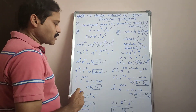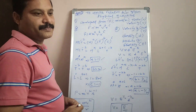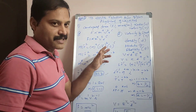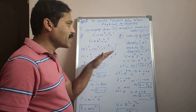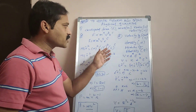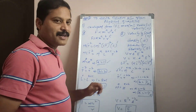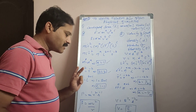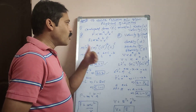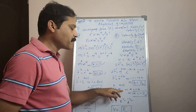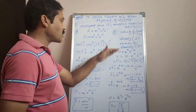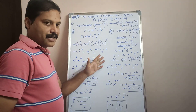The last topic is the limitations of dimensional methods. First, this method is not applicable for dimensionless constants — quantities like angle, strain, and relative density which have no dimensional formula. Second, it fails if the equation consists of more than two terms; for example, S = UT + ½AT² has two terms, but if there are more than two terms, the dimensional method cannot be applied.